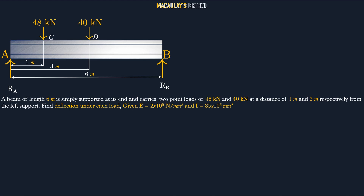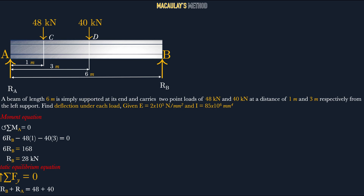First, we find the reaction forces. Taking moments about point A with counterclockwise positive: Rb × 6 − 48 × 1 − 40 × 3 = 0, giving Rb = 28 kN. Then using the static equilibrium equation along the y-axis, Ra + Rb − 48 − 40 = 0, so Ra = 60 kN.